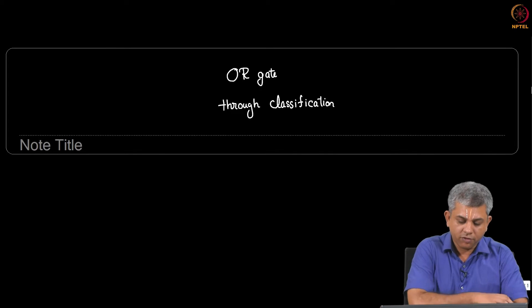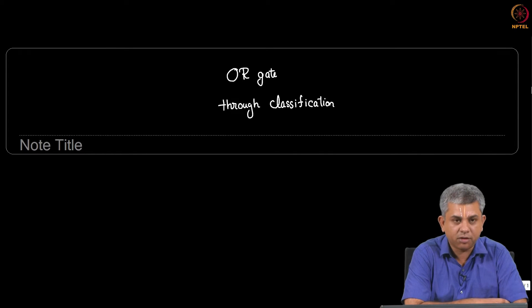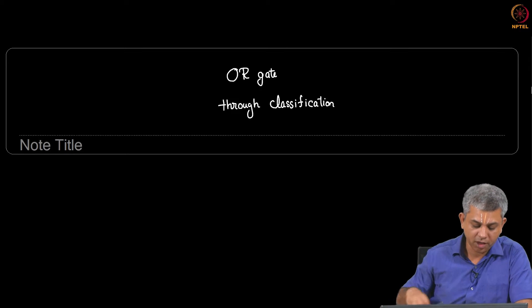In this video we will be looking at a simple example of logistic regression by trying to represent OR gate as a classification problem. So, let me show you what I mean here.